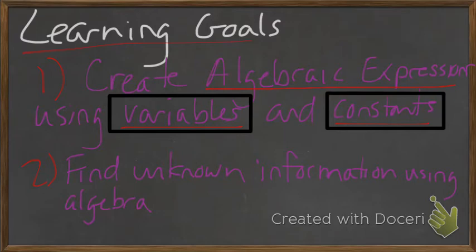using variables and constants. Now, these two terms, variables and constants, we've seen before. We're going to do a quick recap on those as well. And our second learning goal is to find unknown information using algebra. It's very straightforward, like I said. Just have to follow the rules.